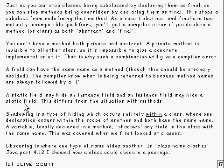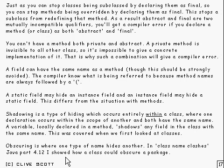There are a couple of technical terms. Shadowing occurs entirely within a class — it's where one declaration occurs within the scope of another and both have the same name. A variable locally declared in a method will shadow any fields in the class with the same name; I covered this when I looked at classes. There's another term, obscuring — it's not of much use, but it's where a name of one type hides another. For example, a class could obscure a package, which is covered in Java part 4.12.